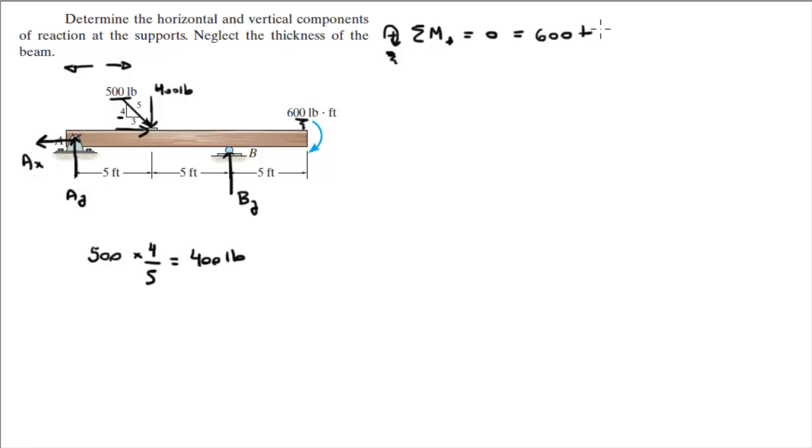So the 600 foot-pound moment plus the 400 pounds times the distance from A, which is 5 feet, times 5,